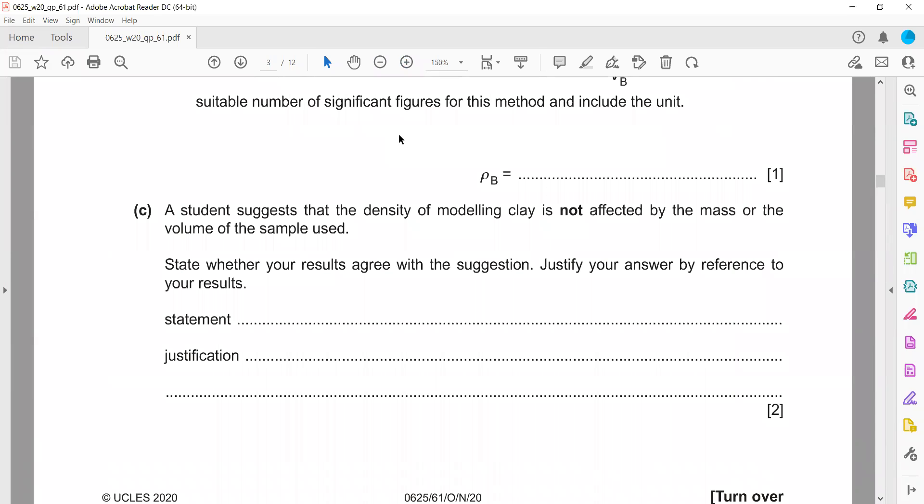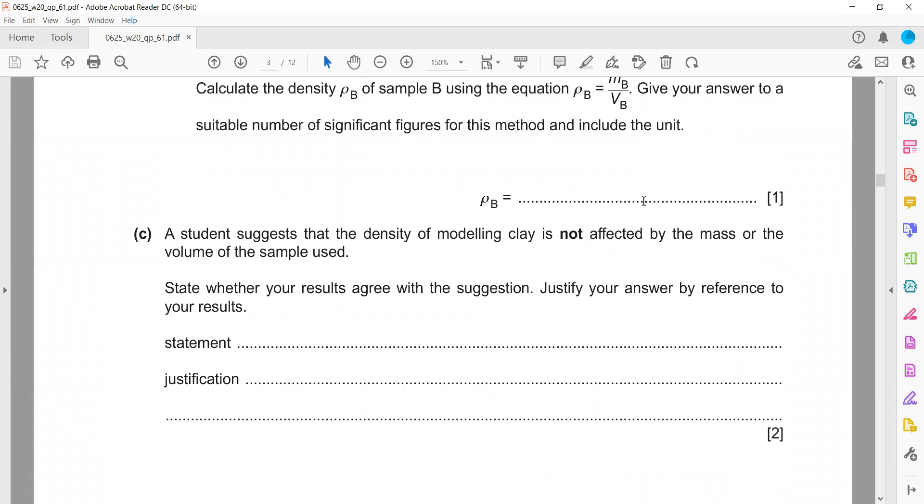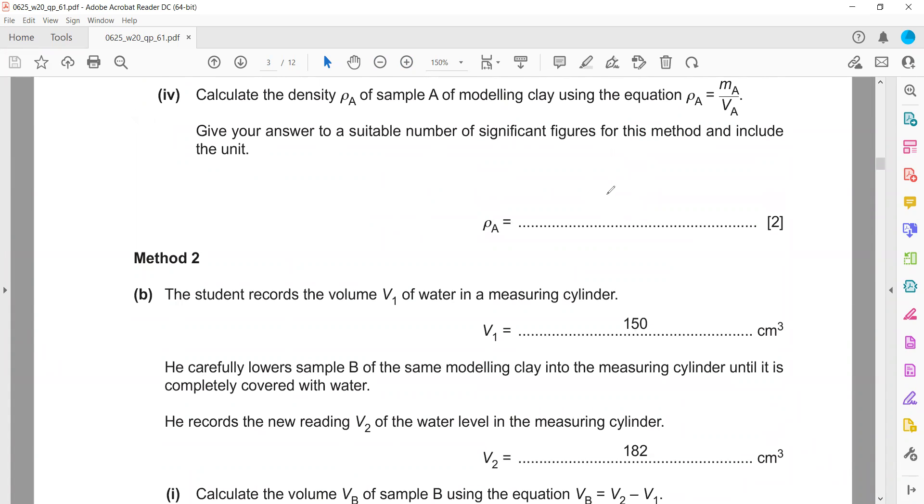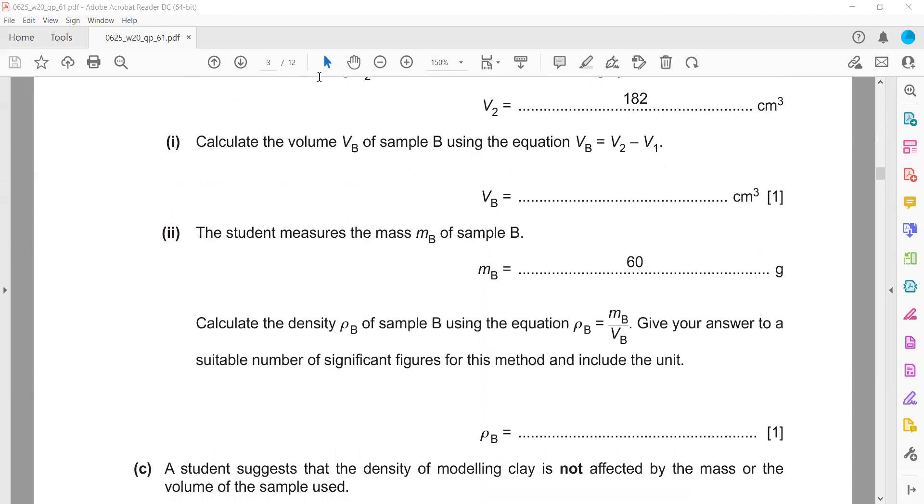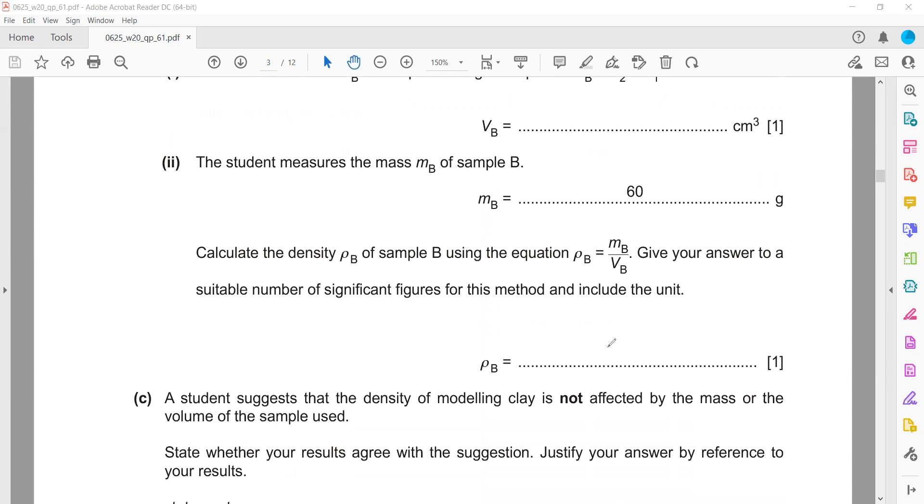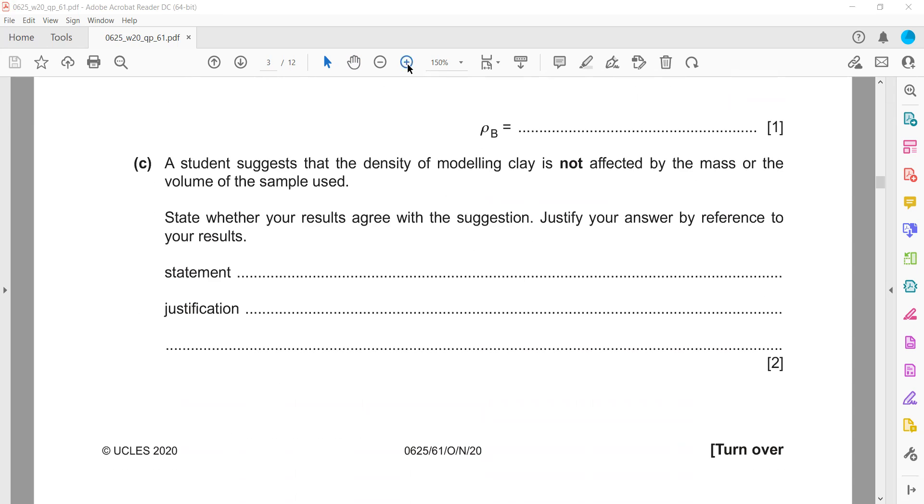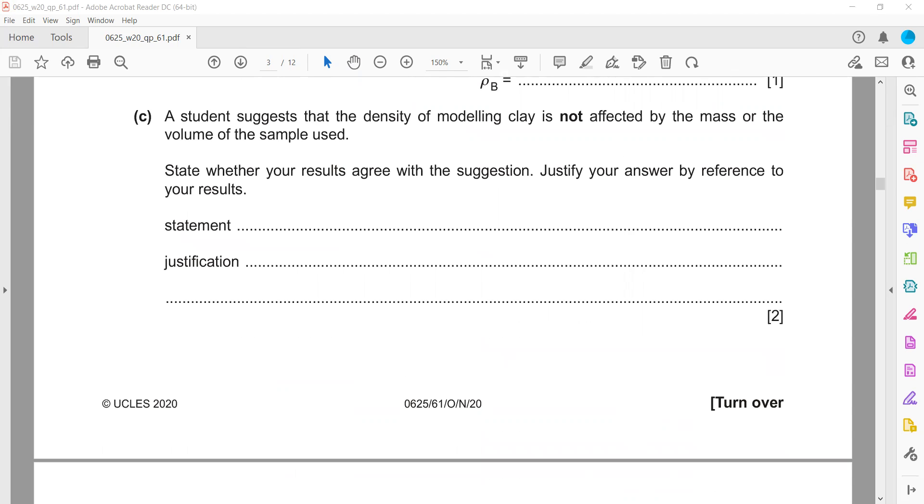A student suggests that the density of modeling clay is not affected by the mass or volume of the sample used. State whether your results agree with the suggestion and justify by reference to your results. When we took sample A, we got a density of 1.89 g/cm³. When we took another sample, we got 1.88 g/cm³. These two values are approximately equal, so the statement matches the result.